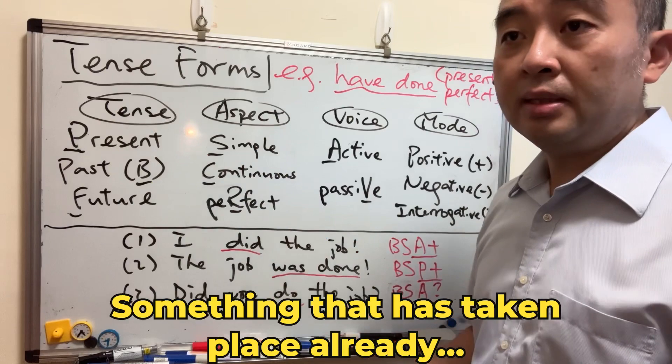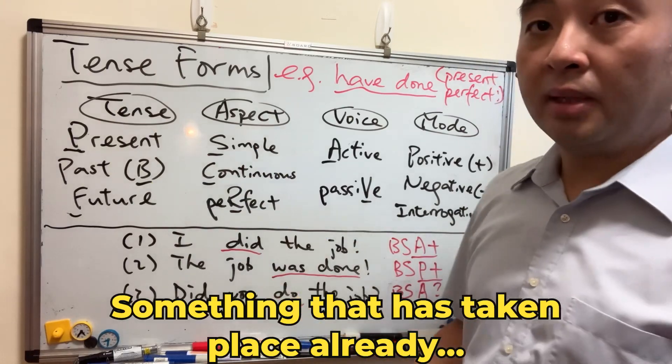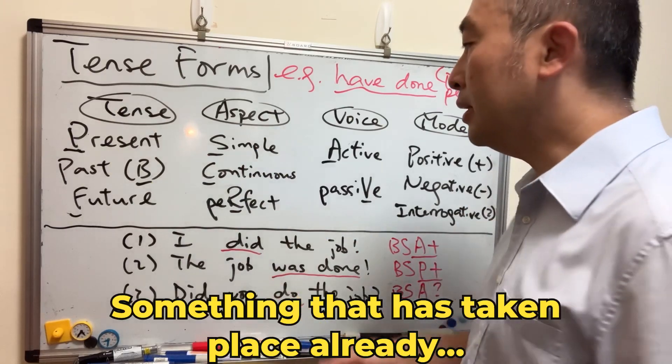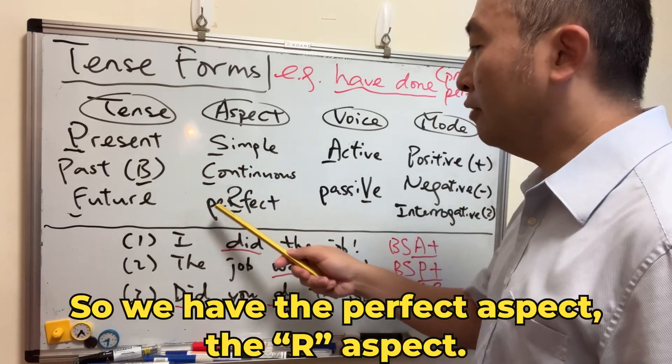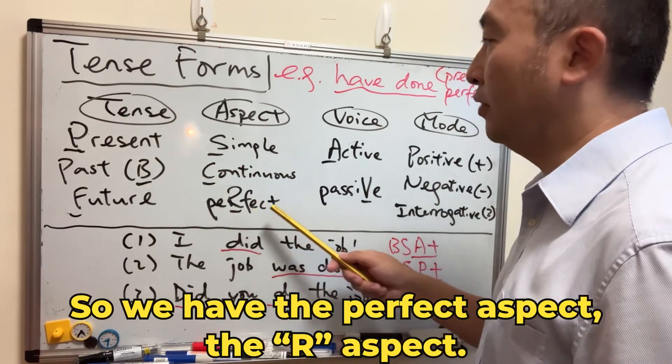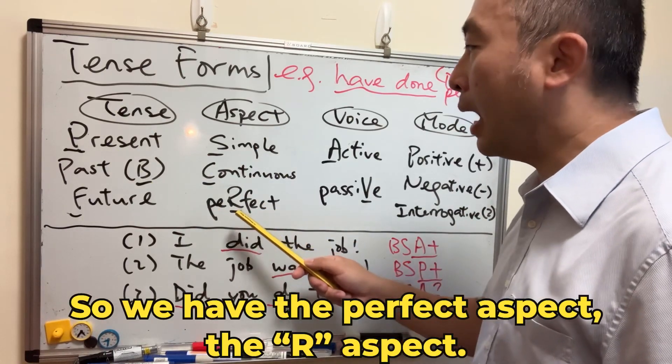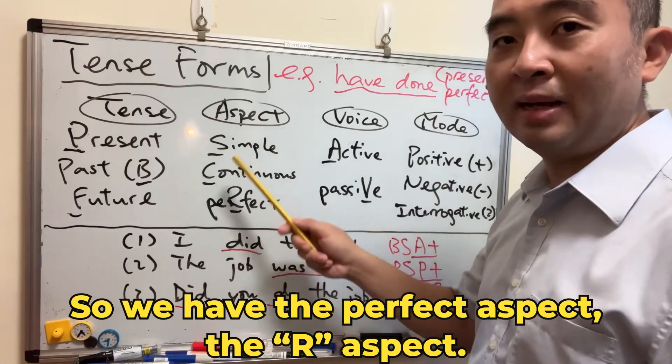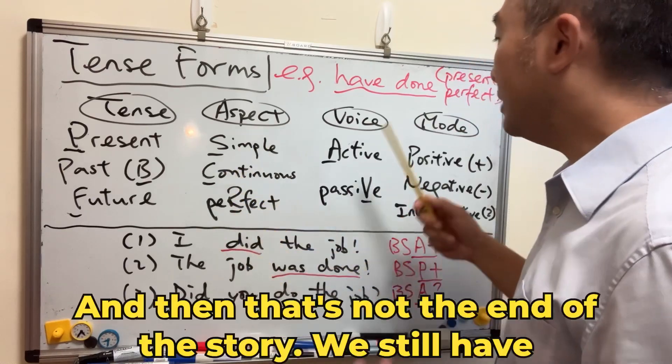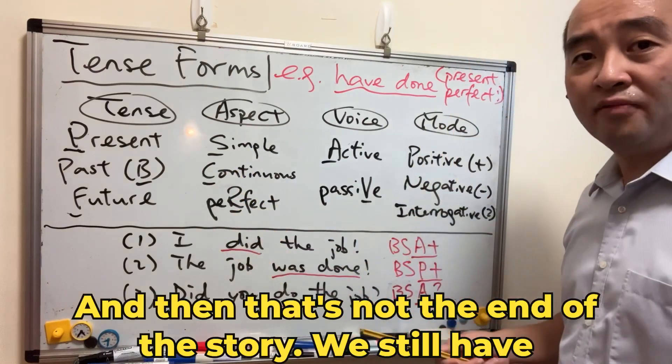Something that has taken place already — so we have the perfect aspect, the 'out' aspect. And that's not the end of the story.